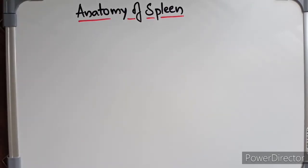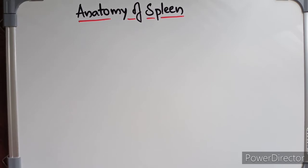Welcome. Today we are going to discuss the anatomy of spleen. The spleen filters blood by removing damaged RBCs, manufactures RBCs in fetal life, and produces lymphocytes after birth. It provides immunity by producing IgM cells and stores RBCs, releasing them into circulation when required.